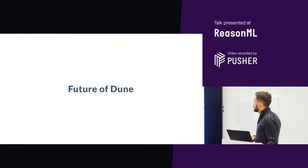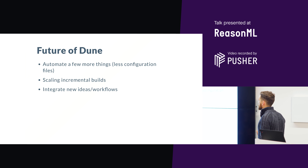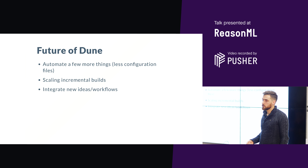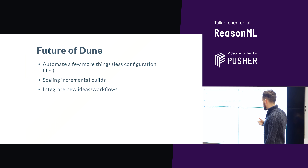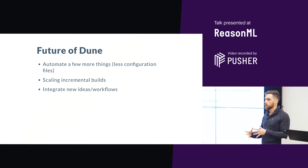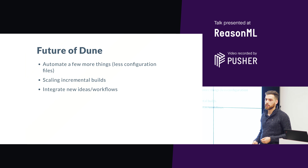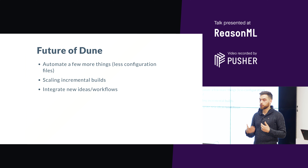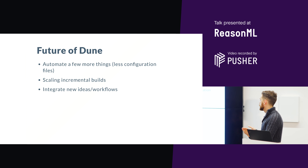For future plans, we want to automate a few more things. In particular, when you start a new project you have to write configuration files for Dune, Travis, Esy, etc. We want to make it easier for users to only need to know about Dune — because your build system already knows how to build your project, Dune can take charge of configuring everything else. We've been talking with the Esy team about having Esy read Dune configuration files, and people are quite happy with this idea.